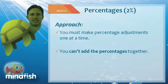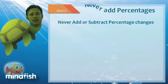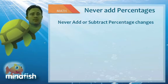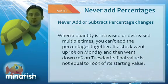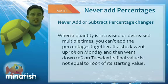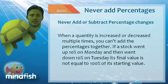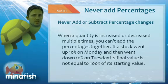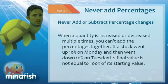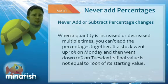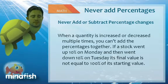Never add percentages. What I mean by that is if I gave you $100 and it went up by 20% and then down by 20%, do not add 20 and subtract 20 and say you're back at $100. In that example, if you raised $100 by 20% it'd be at 120, and if you reduced 120 by 20% you'd be reducing it by 24. You'd actually be back at $96, or down 4%.